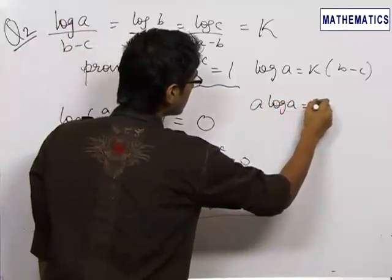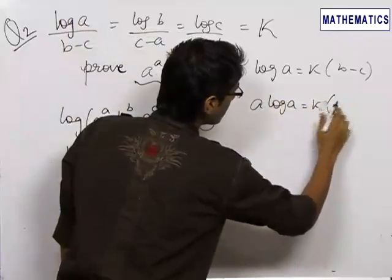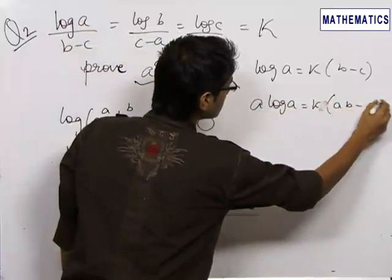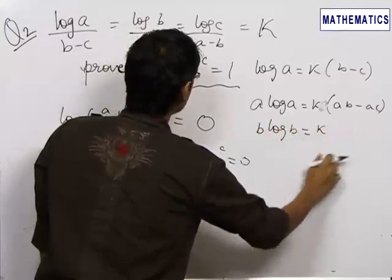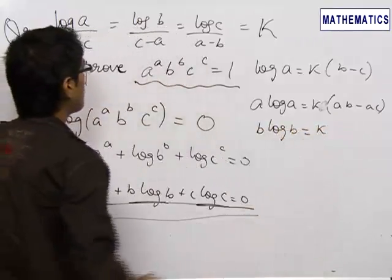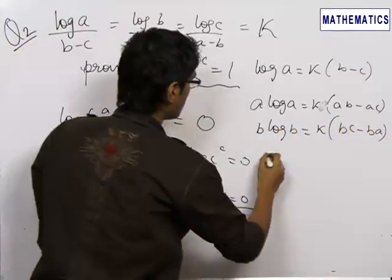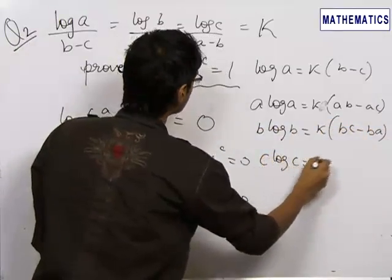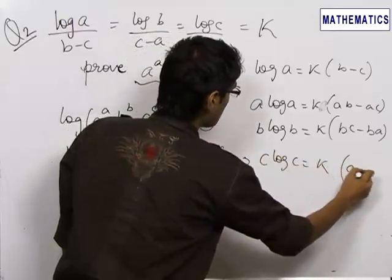a log a equals k times ab minus ac. Similarly, b log b equals k times bc minus ba. And c log c equals k times ca minus cb.